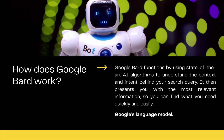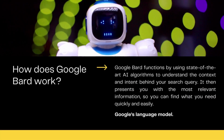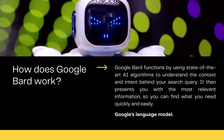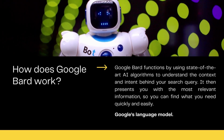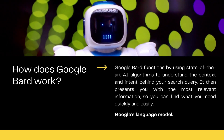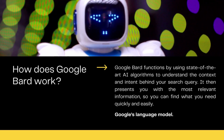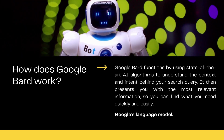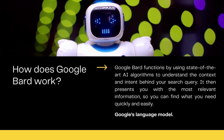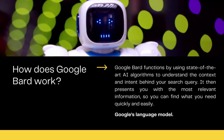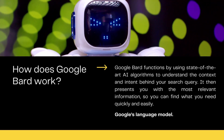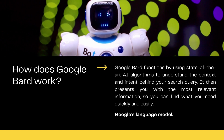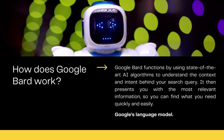How does Google Bard function? Google Bard functions by using state-of-the-art AI algorithms to understand the context and intent behind your search query. It then presents you with the most relevant information, so you can find what you need quickly and easily. The tool uses a vast database of information to provide answers, and it continues to learn and improve its accuracy over time. According to Google, Bard uses online information to give fresh, high-quality information. Lambda, Google's language model built on Transformer and neural network architecture, is at the heart of Google's chatbot.